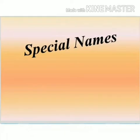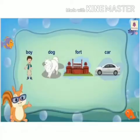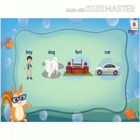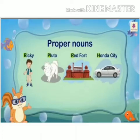Good morning children! Today we are going to revise the chapter on special names. We have already read about naming words — names of things, animals, persons, and places. These things, animals, persons, and places can have a particular name to identify them. These particular names are called special names. A special name always starts with a capital letter.